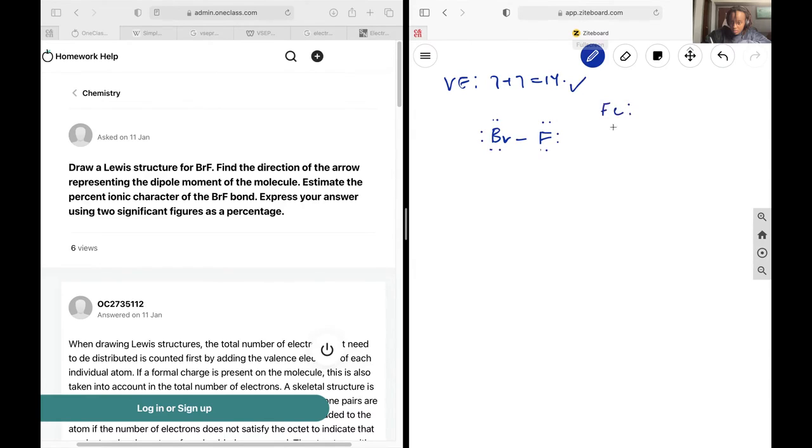I can double check on my formal charges. Br has 7 valence electrons minus the 6 in lone pairs minus the 1 in the bonding pair, giving you a net formal charge of 0 for the Br. For fluorine, it is going to be 7 minus 6 minus 1, yielding 0 as well. This all makes sense, so this is a correct Lewis structure.